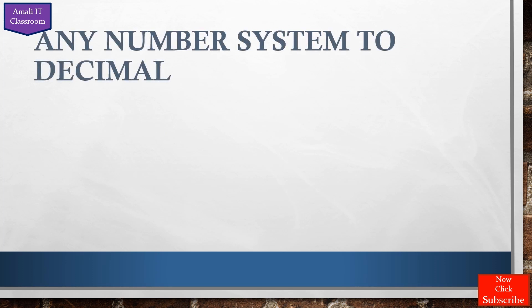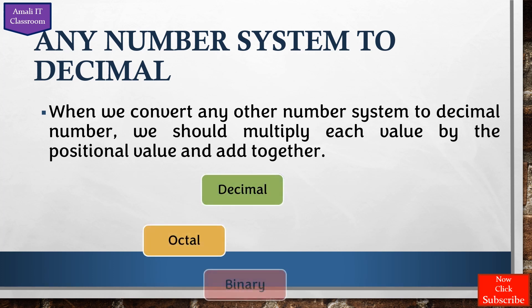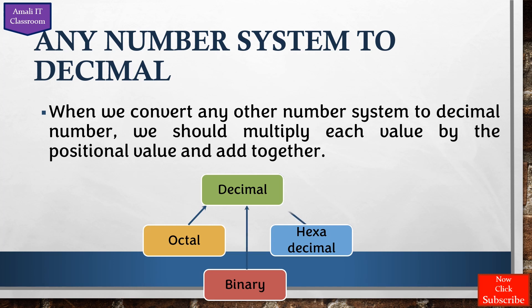The second type of conversion: when you want to convert any number system into decimal, you multiply each digit by its positional value and then add all those values together. This method applies when converting binary, octal, or hexadecimal into the decimal number system.